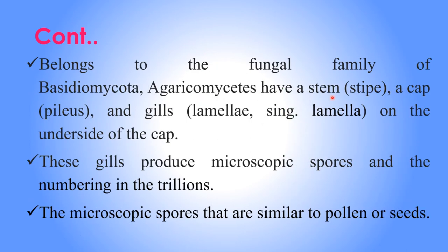Mushrooms have a stem, a cap, and gills present on the underside of the cap. The gills can produce trillions of microscopic spores. These spores are similar to pollen or seeds.